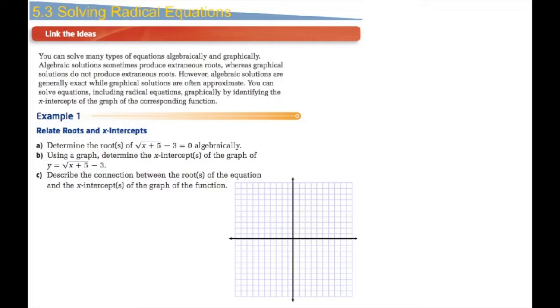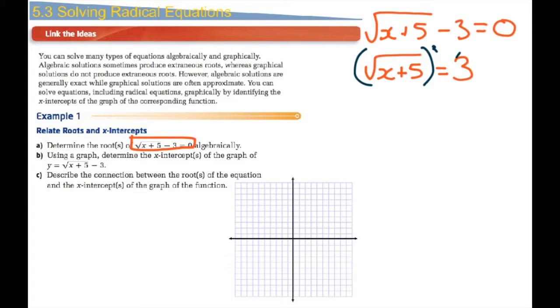So this radical equation here, square root of x plus 5 minus 3 equals 0. In pre-calculus 20, we would have solved this algebraically, doing it by hand. In order to do it this way, we need to isolate the root sign, so we'll add 3 to both sides. Canceling out the root means we have to square both sides, which gives us x plus 5 equals 9. Subtract the 5 and we get that x equals 4.